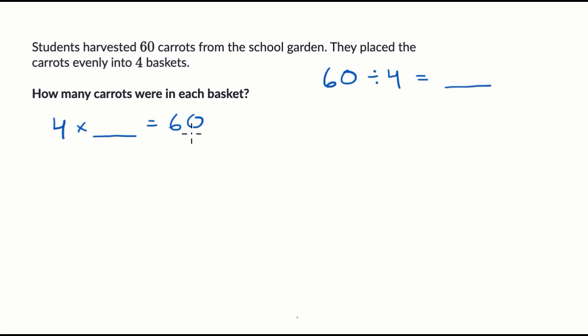So let's see if we could reason this out. We know that 4 times 10 is equal to 40, but that doesn't get us all the way there. We need to get another 20, but we also know that 4 times 5 is going to be equal to 20.